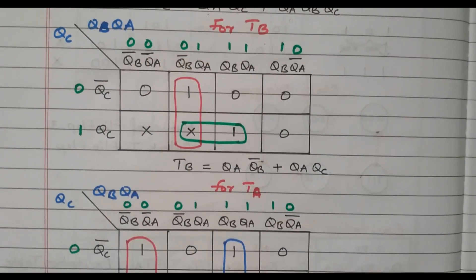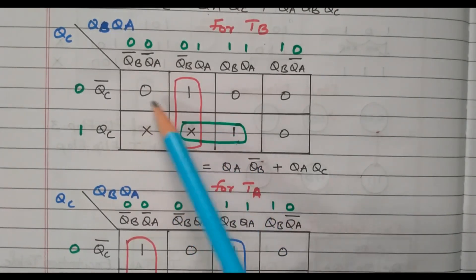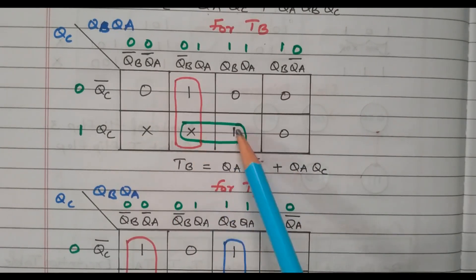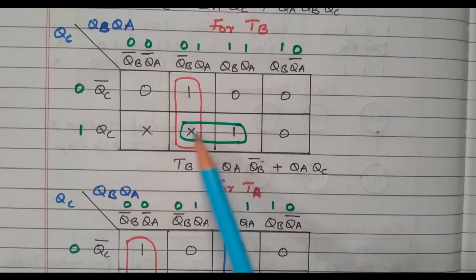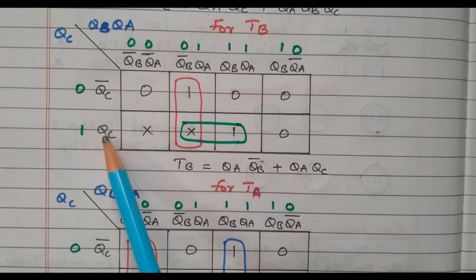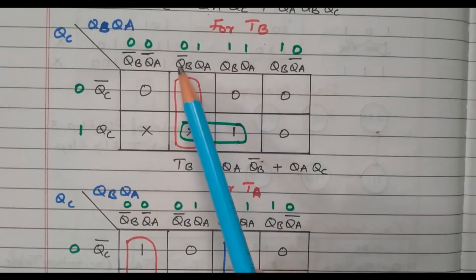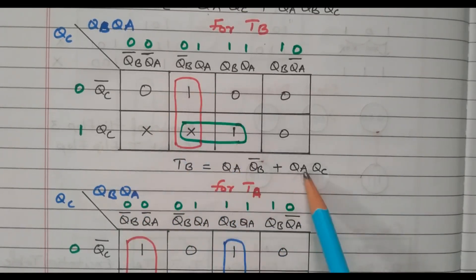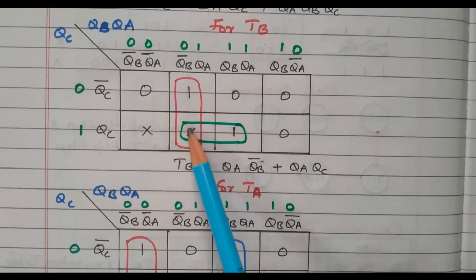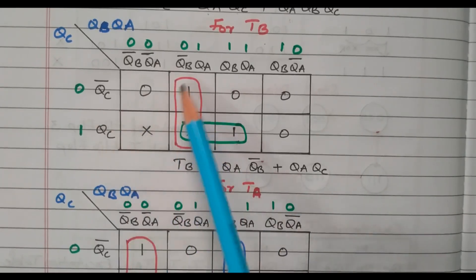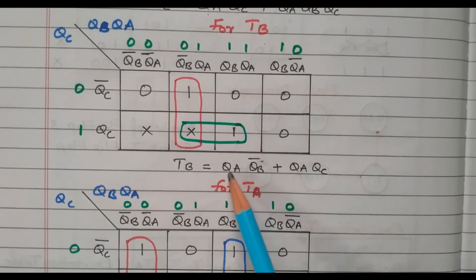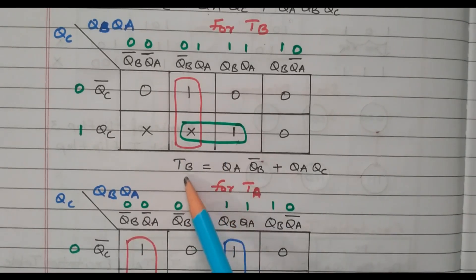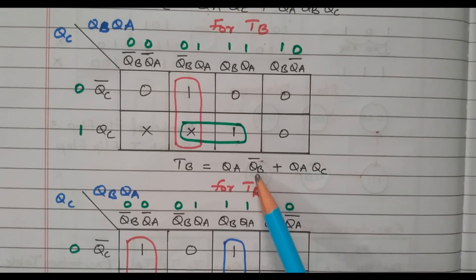For TB, the K-map has two 1s and two don't care conditions. Combining the two groups: one group gives QC·QA and the other gives QB-bar·QA. So the expression for TB = QA·QB-bar + QA·QC.